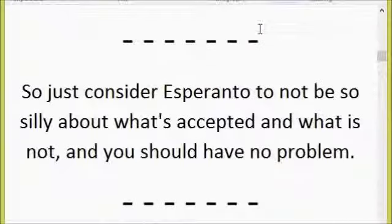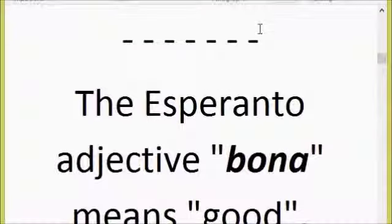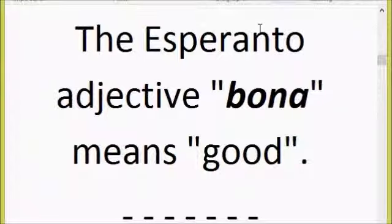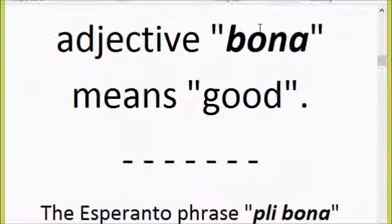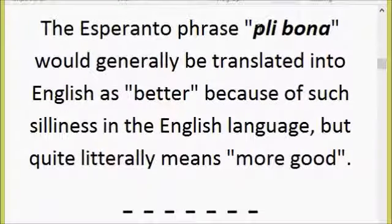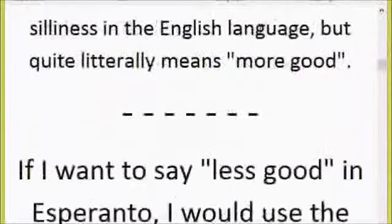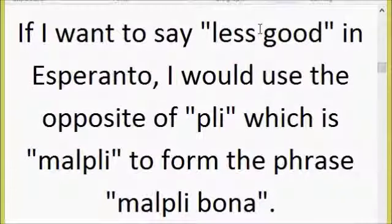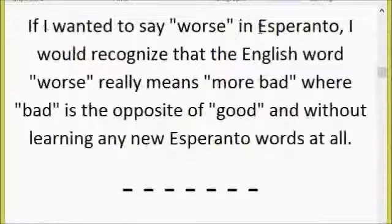Just consider Esperanto to not be so strict about what's accepted and what is not, and you should have no problem. The Esperanto adjective 'bona' means 'good.' The phrase 'pli bona' would generally be translated into English as 'better,' but quite literally means 'more good.' The opposite of 'pli' is 'malpli,' so 'malpli bona' means 'less good.' 'Pli' means 'more,' 'malpli' means 'less.'